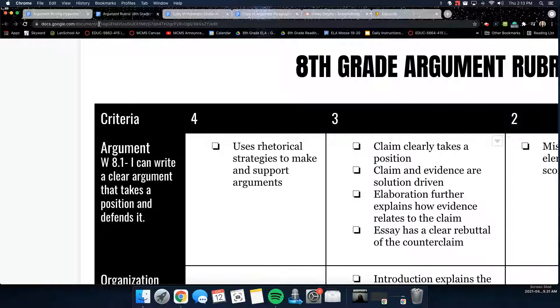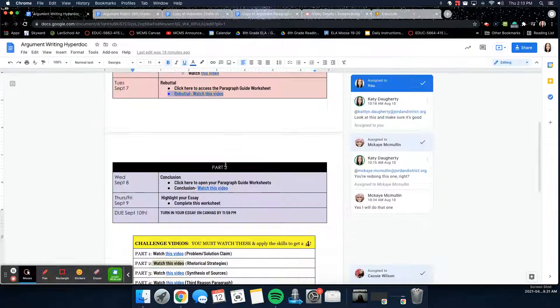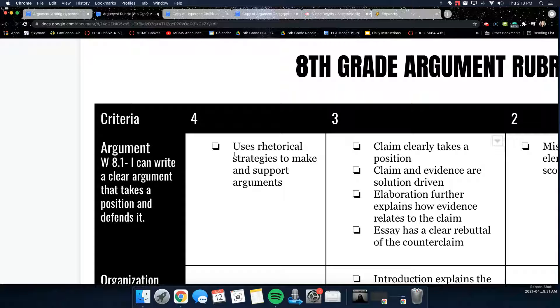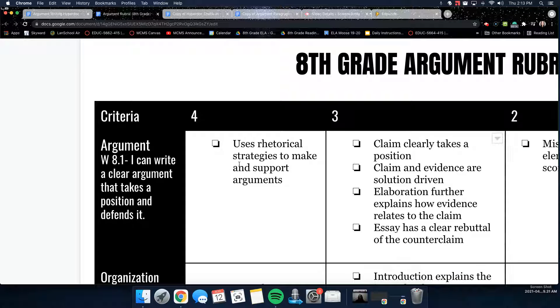There is on the argument writing hyperdoc, if you scroll down to the very bottom, there are these challenge videos. And if you apply all of these, you can get a 4 on all of the categories, as long as you've met all of the criteria for a 3 as well.